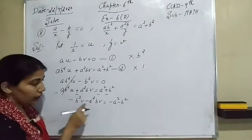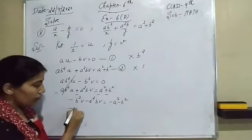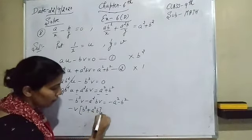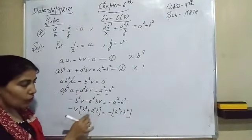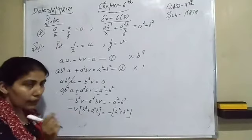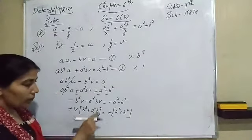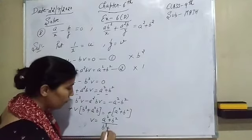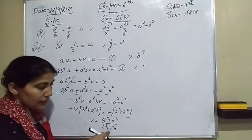Now we find the value of v. Taking minus v as common: minus v times (b³ + a²b) equals minus(a² + b²). Taking b common from the bracket gives: minus vb(b² + a²) equals minus(a² + b²). So v equals (a² + b²) divided by b(b² + a²).